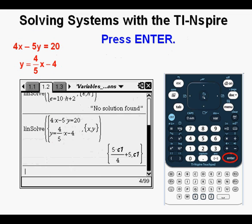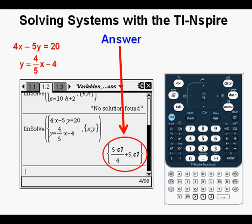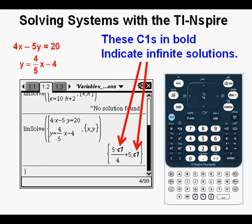Here is our answer. Whenever you see this C1 in the X and Y place, that means that the two lines represented by the equations are the same equations and therefore produce an infinite number of solutions.